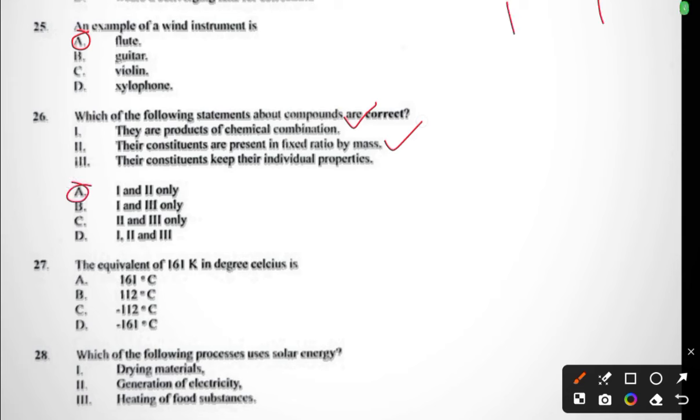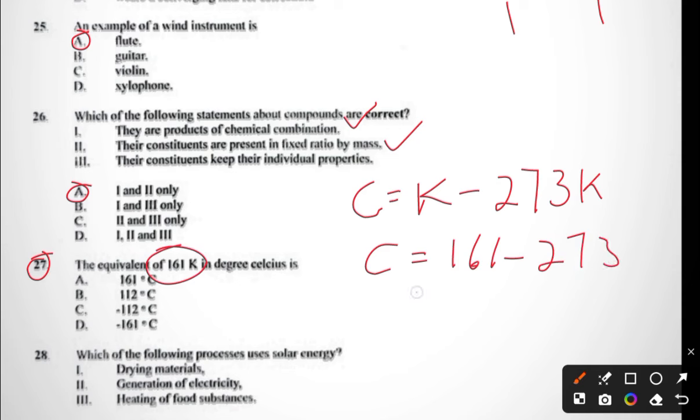Question twenty-six: which of the following statements about compounds are correct? (i) They are products of chemical combination; (ii) their constituents are present in fixed ratio by mass; (iii) their constituents keep their individual properties. Looking through, (i) is correct and (ii) is also correct. So question twenty-six, the answer is A. Question twenty-seven: the equivalent of 161 kelvin in degree celsius. To do this, we need to know the formula: celsius equals K minus 273 kelvin. C equals 161 minus 273, which equals negative 112 degrees celsius. So the answer to question twenty-seven is C.